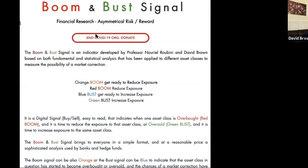It's very simple because it's digital. There is a red signal when you're supposed to reduce exposure to an asset class, and there is a green signal when you're supposed to increase your exposure. So it's digital — red and green — indicating when to reduce or increase your exposure to that asset class.